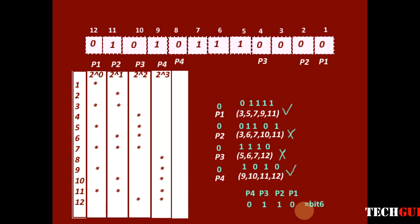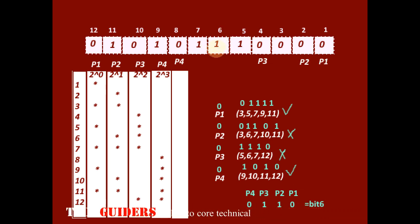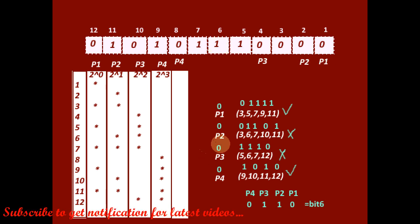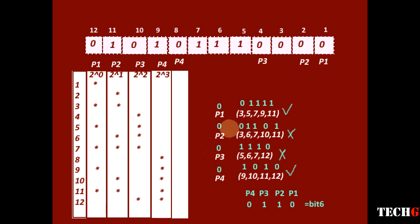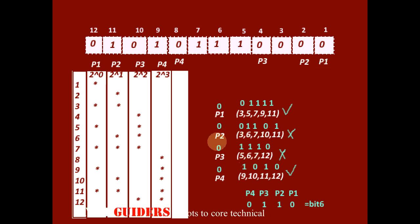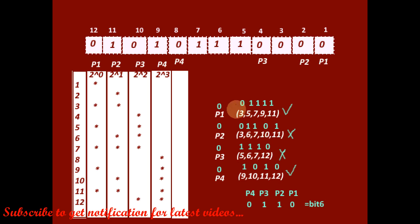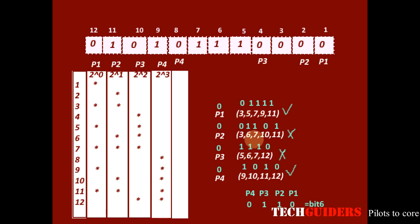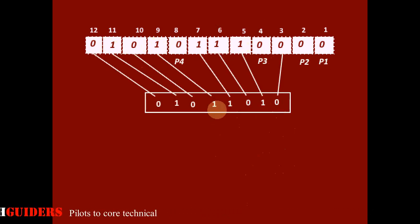The parity values p4=0, p3=1, p2=1, p1=0 correspond to bit position 6. It means bit position 6 is corrupted, and the bit there should actually be 0. We can see p2 and p3 are wrong, and the intersection of p2 and p3 includes positions 6 and 7. Since p1 is correct, bit 7 is correct, so bit position 6 is the corrupted bit. While extracting the data from the code word, bit position 6 should be corrected to 0.